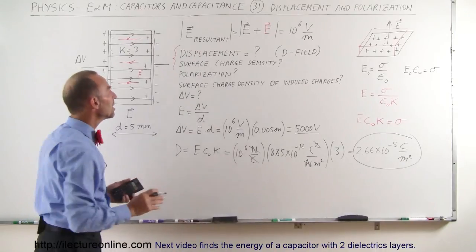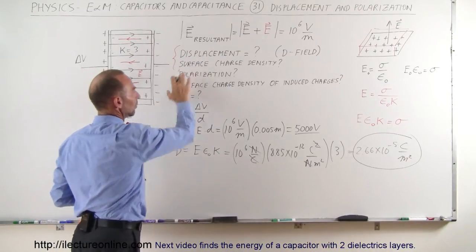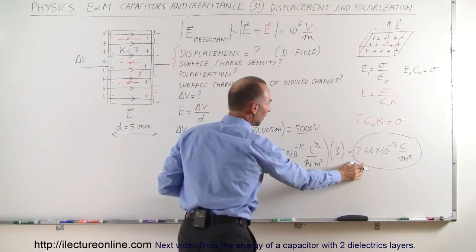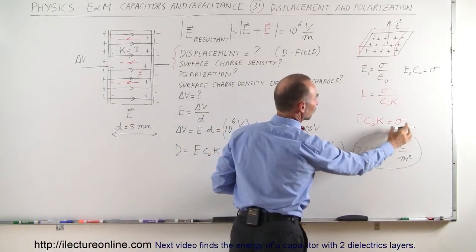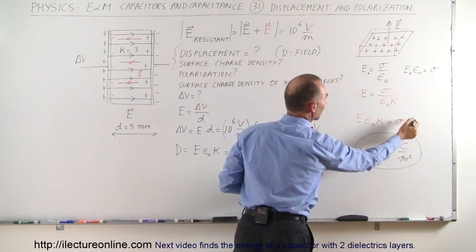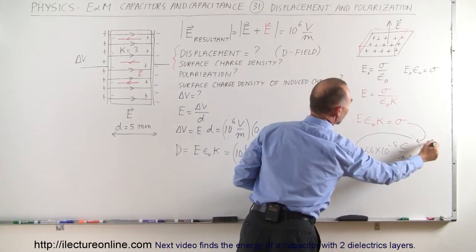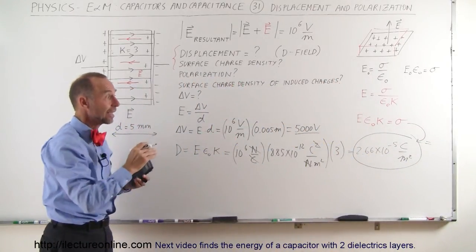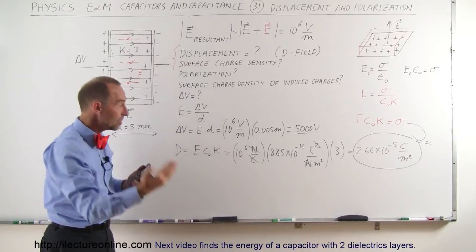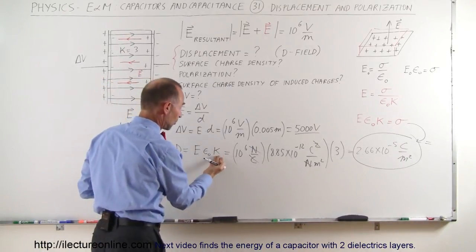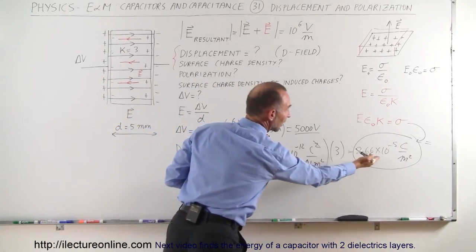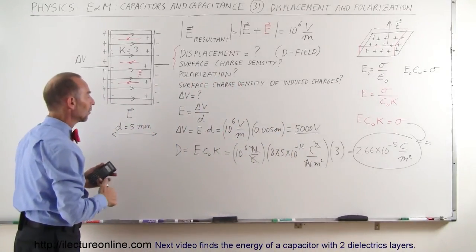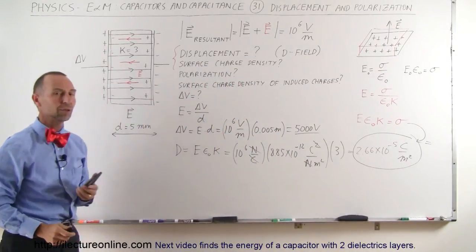What is the surface charge density? Since the displacement has the same units as surface charge density and equals sigma, the surface charge density when we put a dielectric in there is also 2.66 times 10 to the minus 5 coulombs per meter squared — increased by a factor of 3 compared to without the dielectric.